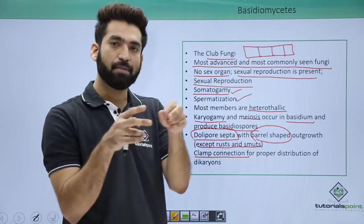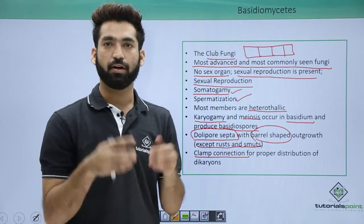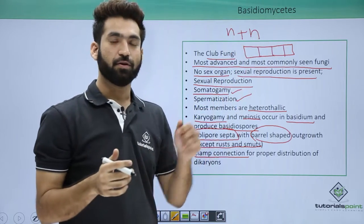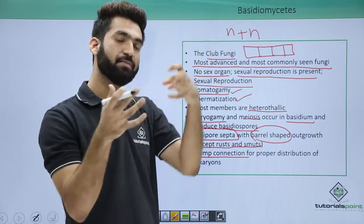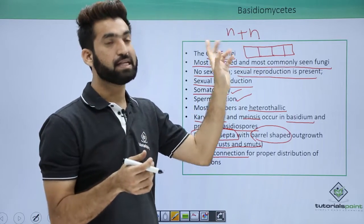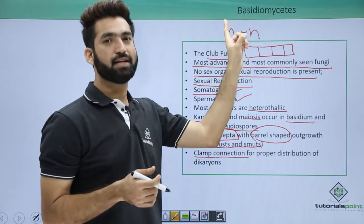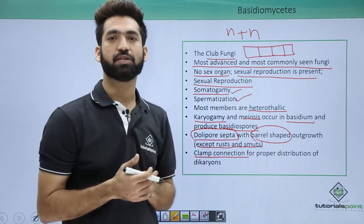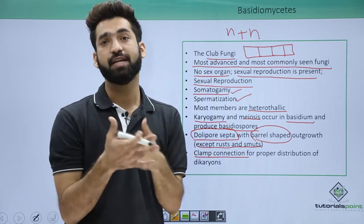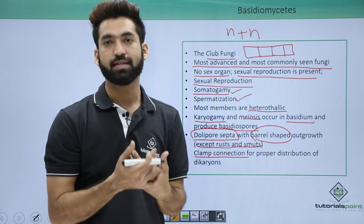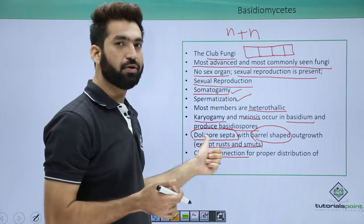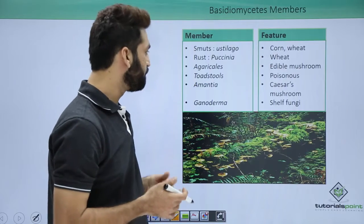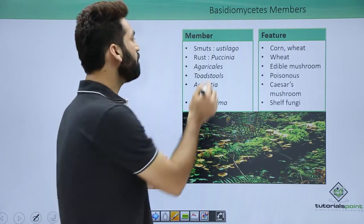Basidiomycetes have clamp connections, which are required for the proper distribution of the dikaryotic stage. The dikaryotic (n+n) stage is where the cytoplasm has fused but the nuclei have not yet fused. Most Basidiomycetes members remain in this dikaryotic stage for a long time. The clamp connections present in the septa facilitate this.